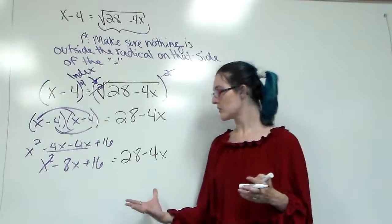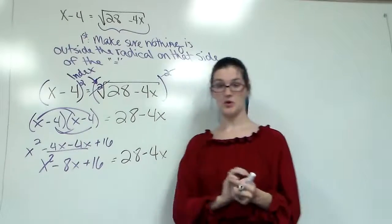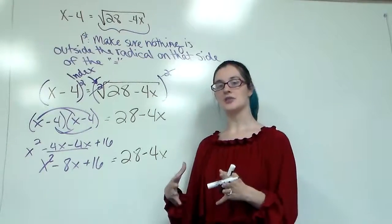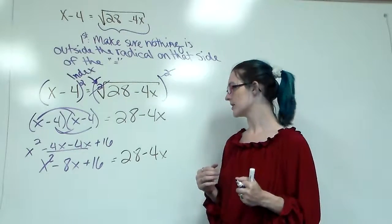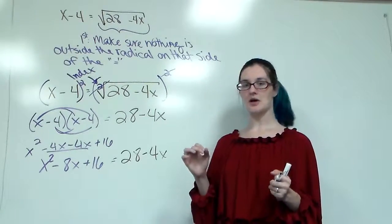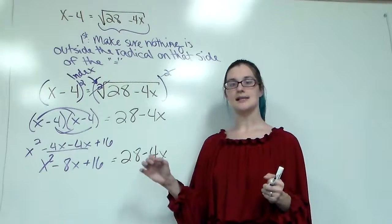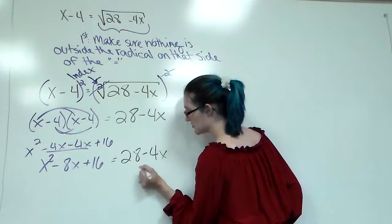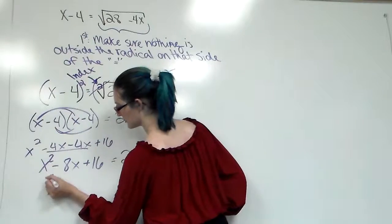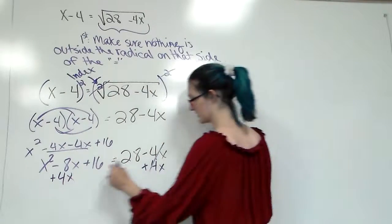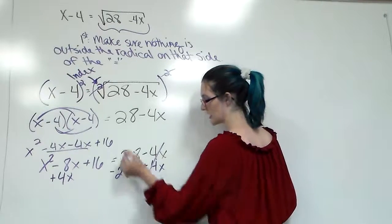28 minus 4x. Now anytime you're solving an equation, again equations have equal signs, and you have an exponent. Your goal is to get everything to one side and factor. When we covered factoring, you should have talked about it when we did solving polynomials. Anytime you have an exponent and an equal sign, get everything to one side and factor. So we're going to move the 4x to the other side. It's being subtracted, so we're going to add. We're going to move the 28 to the other side. It's positive, so I'm going to subtract it away.